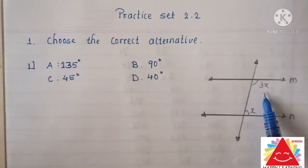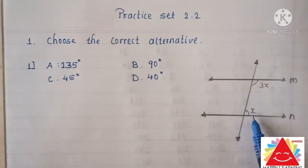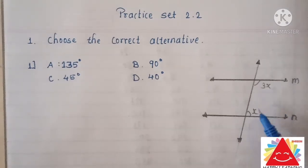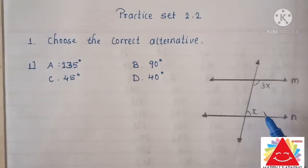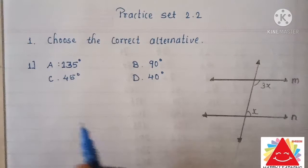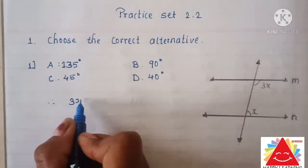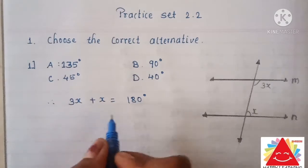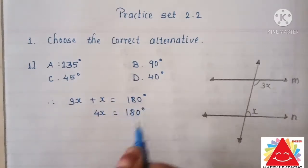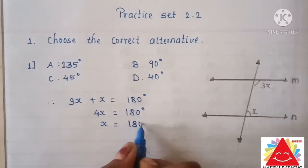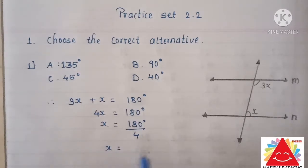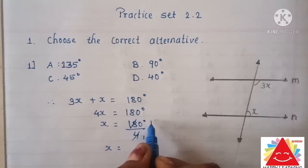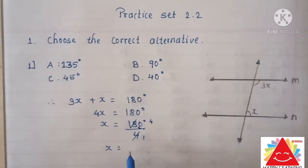In the figure we have 3X and X, and we know that 3X and X are both interior angles of a pair. We can use the property of interior angles — when two parallel lines are cut by a transversal, the sum of the pair of interior angles is 180 degrees. Therefore, 3X plus X equals 4X equals 180 degrees, so X equals 180 divided by 4, which gives us X equals 45 degrees.